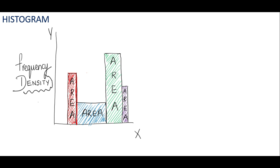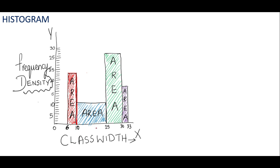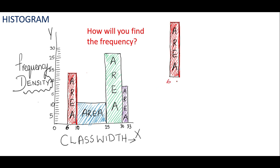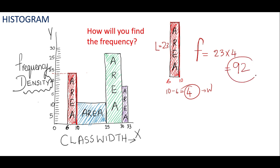In a histogram, it is the area of each bar that gives the frequency. On the x-axis you have the class width, and you can see the unequal intervals. For the first bar, the x-axis runs from 6 to 10, so the class width is 10 minus 6, which is 4. The height — the frequency density — is 23. So the frequency equals 23 times 4, which is 92.